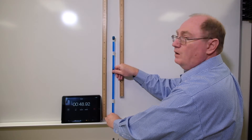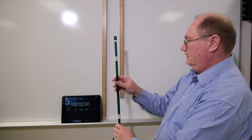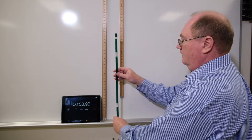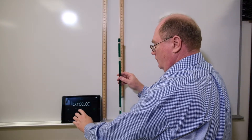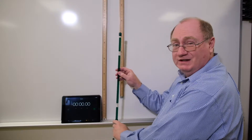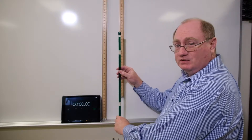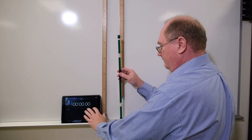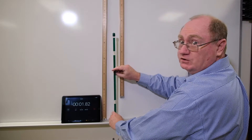We have one last tube — green. We'll do the same process. The distance measurements are again the same. First turn.